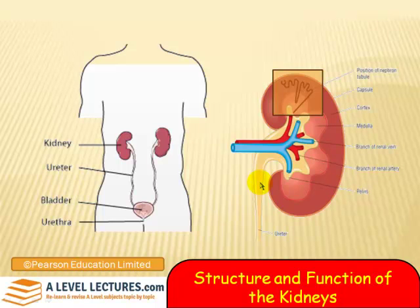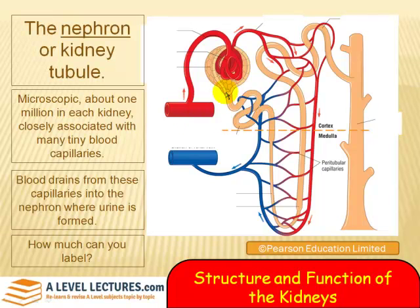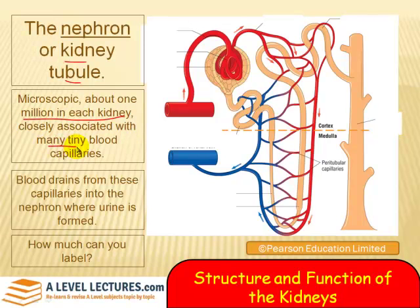We're particularly interested in the position of a kidney tubule, or nephron. The nephron — or kidney tubule, depending which book you're reading — they are very, very tiny, and there are about one million in each kidney. They have a really rich blood supply, with many tiny blood capillaries around the kidney tubules or nephrons.